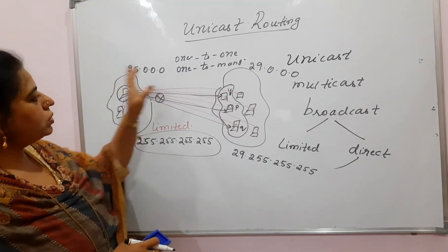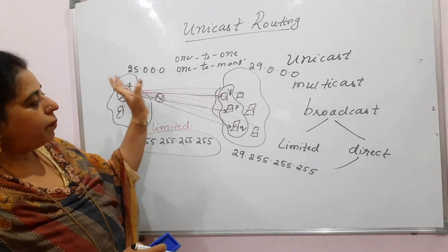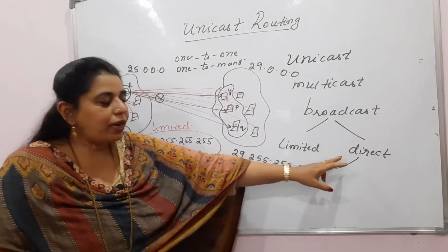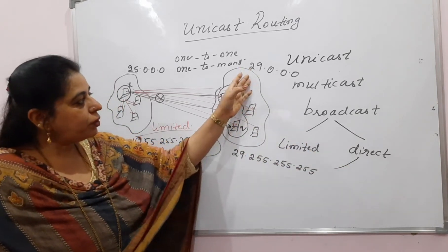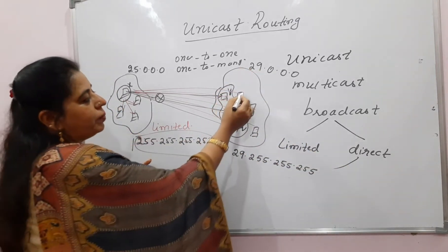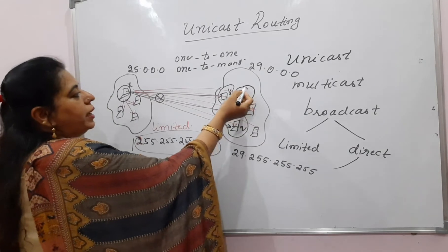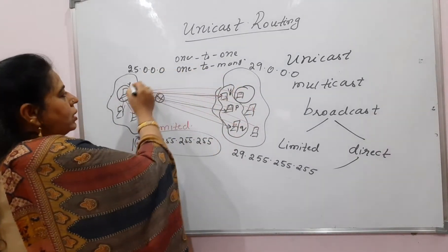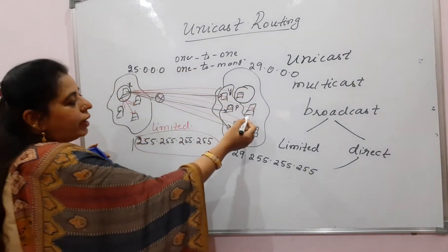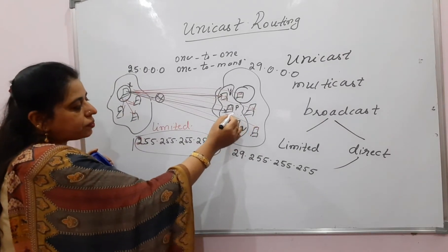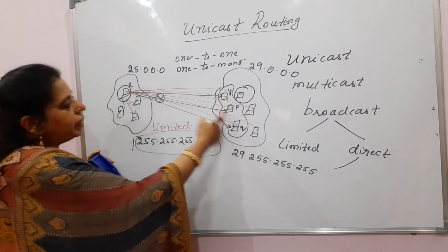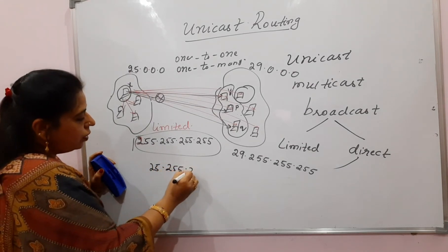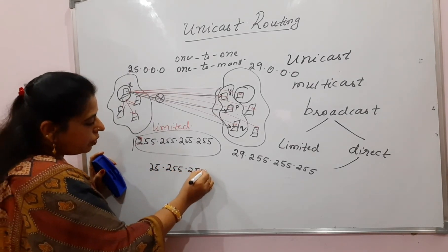The reverse can also happen. If any node from the other network wants to send a packet to all other nodes in that network, it will use the destination address 25.255.255.255.